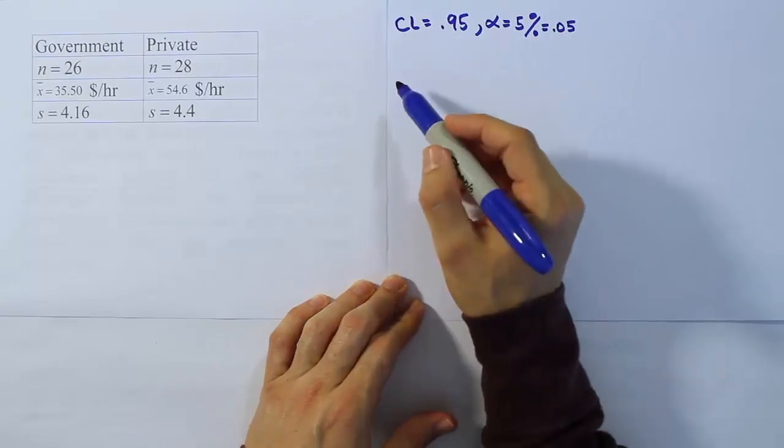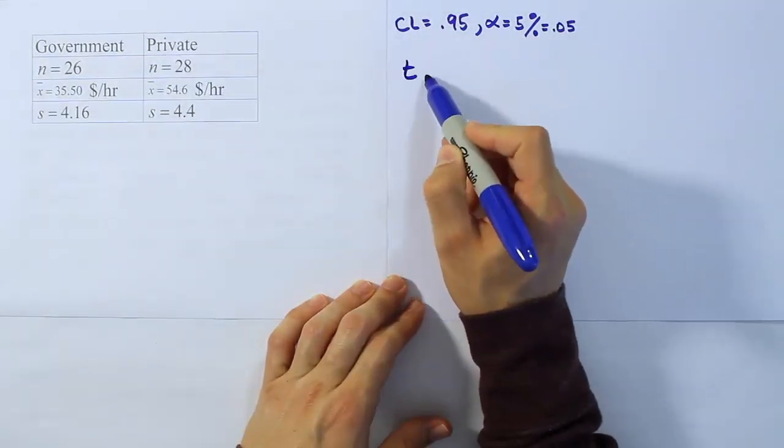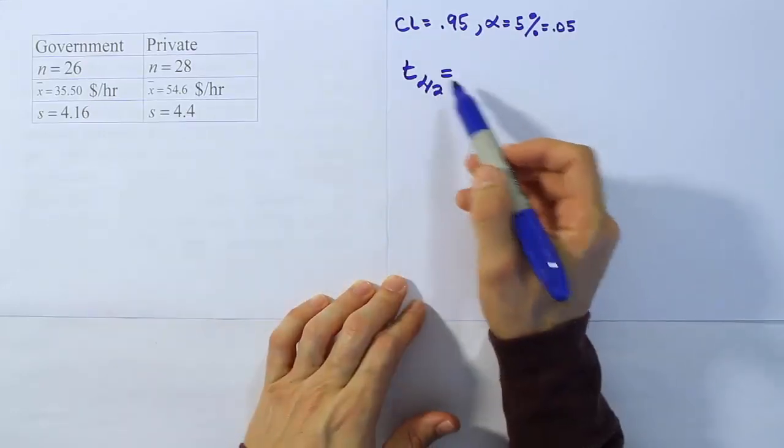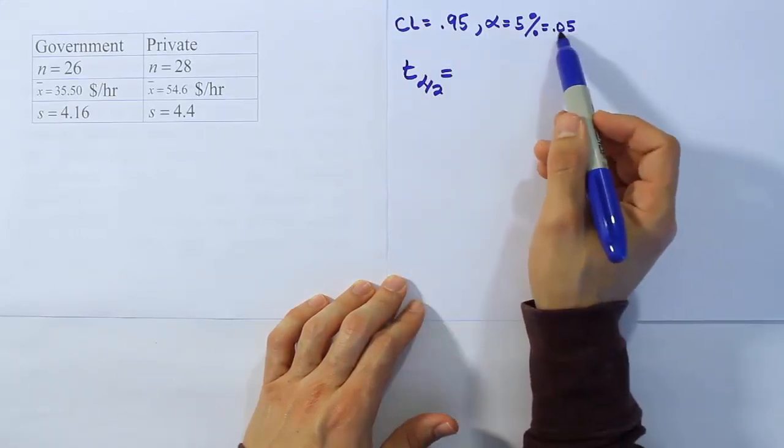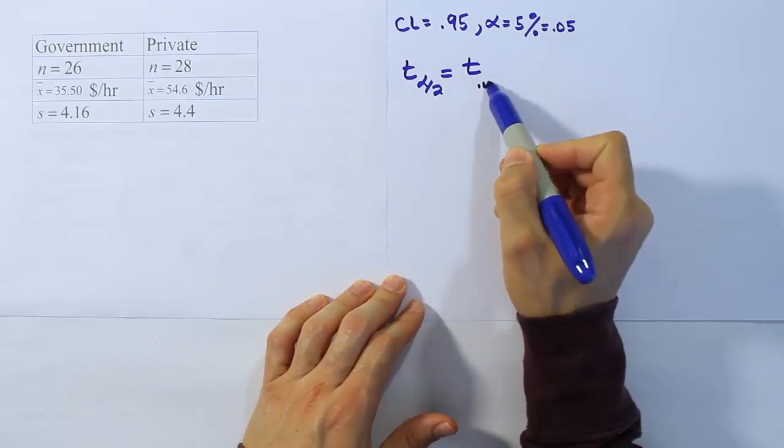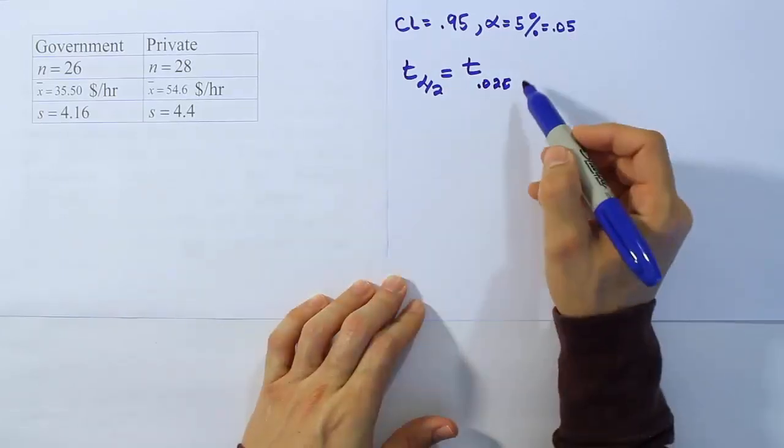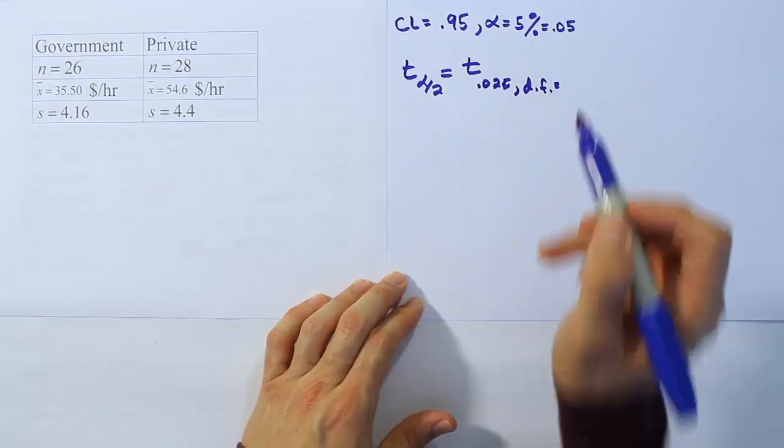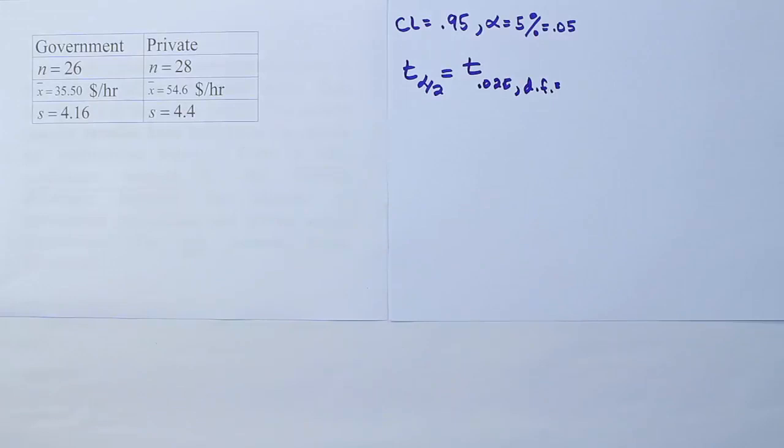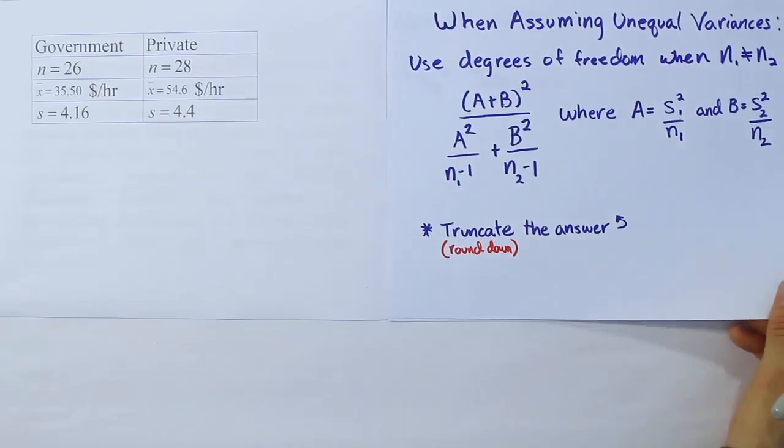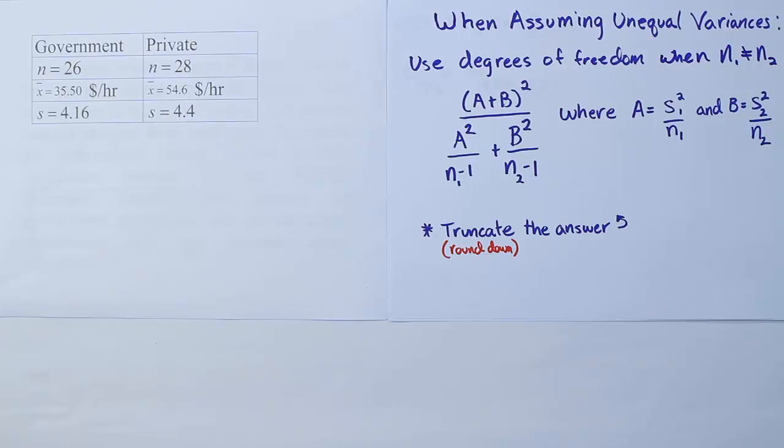Our table value for this problem is going to be a t-value because both sample sizes are small. So we're going to have a t alpha divided by 2 value. We'll be looking at 0.025, half of alpha in two tails. But the degrees of freedom are the question mark. It turns out for this problem, the degrees of freedom aren't as simple as before. It's not just n1 plus n2 minus 2. Here's what we're going to use whenever we have sample sizes that are not equal. So I wrote this down for us so we have it ready. That's the formula we're going to have to use for degrees of freedom. It's called the Welch-Satterthwaite method.